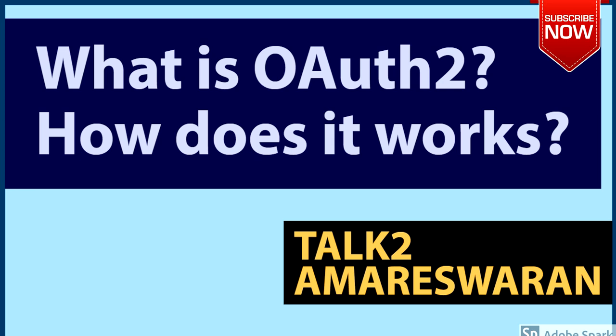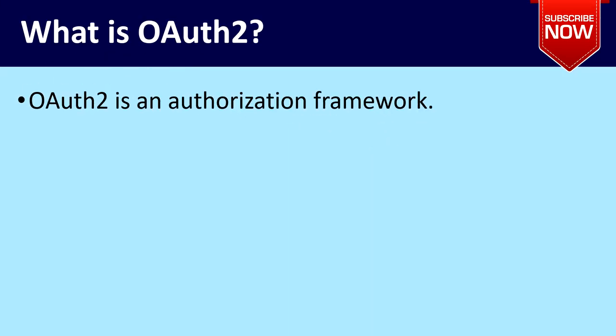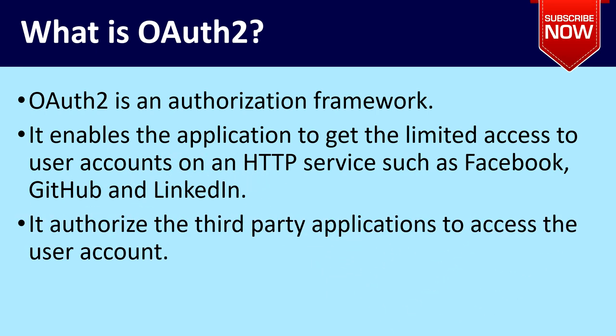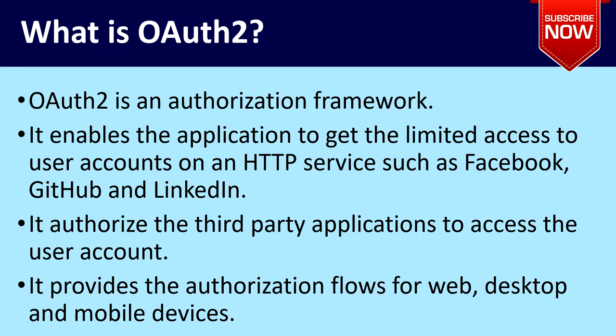Hello everyone. Today I am going to explain what OAuth2 is and how it works. It is an authorization framework that enables applications to get limited access to user accounts on an HTTP service such as Facebook, GitHub, and LinkedIn. It authorizes third-party applications to access user accounts, and provides authorization flows for web, desktop, and mobile devices.